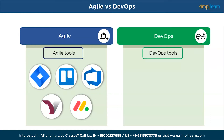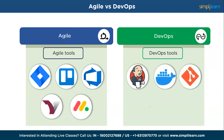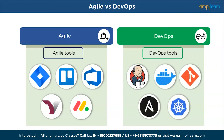The popular DevOps tools widely used in the industry include Jenkins, Docker, Git, Ansible, and Kubernetes. These tools are top-rated and widely adopted in various organizations to streamline development and operations processes, improve efficiency, and enable faster and more reliable software delivery.